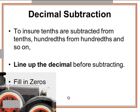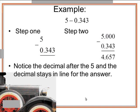So the example that we have here is 5 minus 0.343, or 343 thousandths. So I'm going to do 5 and line it up so that the decimal is in line with the decimal on the other number.